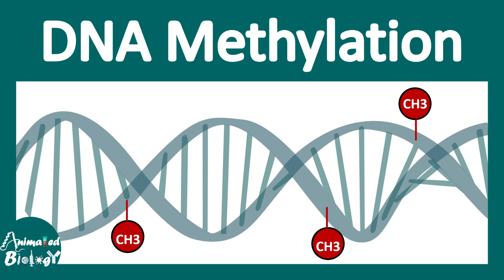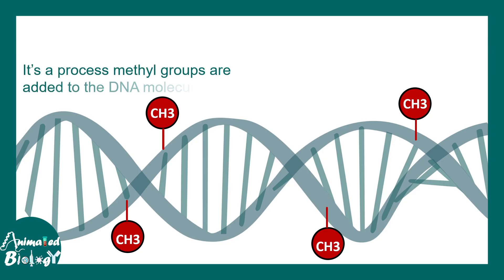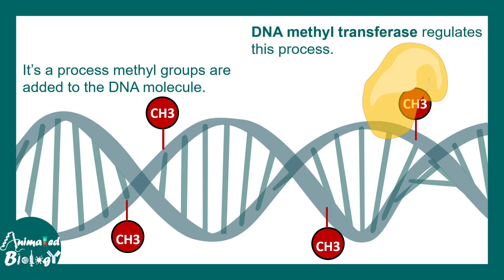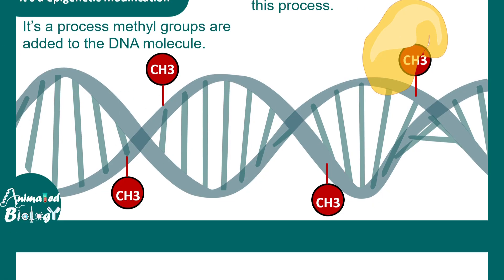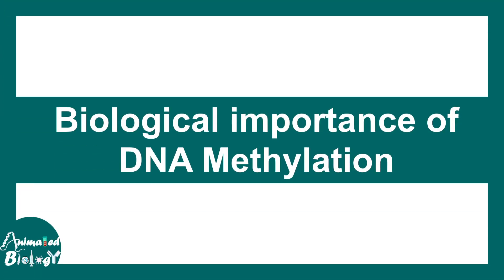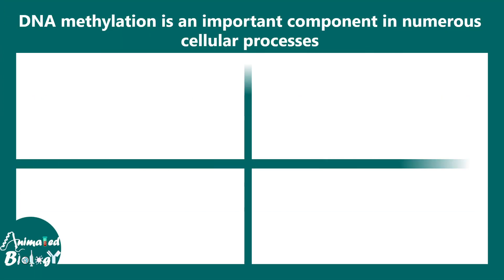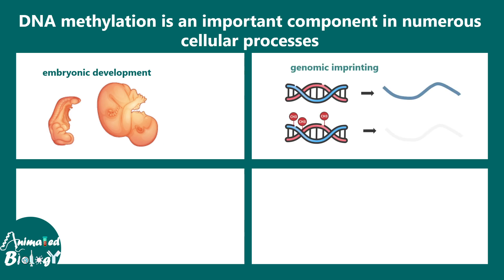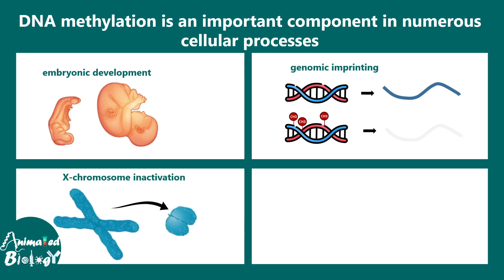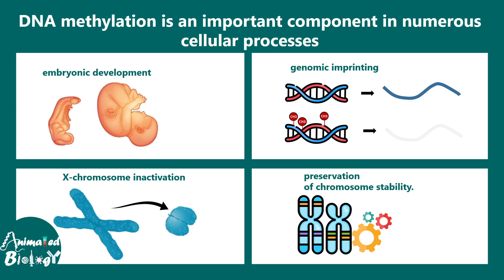DNA methylation is the process by which particular residues in the DNA get methylated, and this happens with the help of the enzyme DNA methyltransferase — this is an epigenetic regulation. Biologically, DNA methylation is super important for various processes like embryonic development, genomic imprinting, X chromosome inactivation, and preservation of chromosome stability.